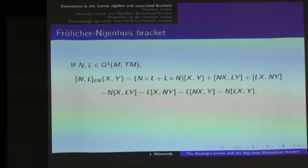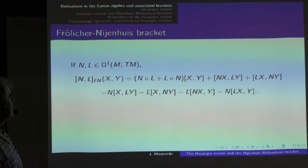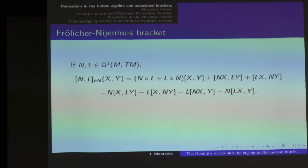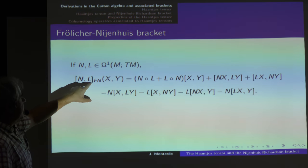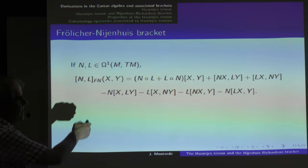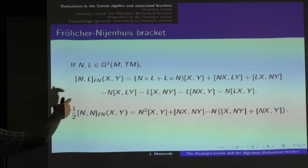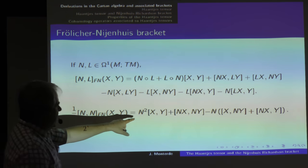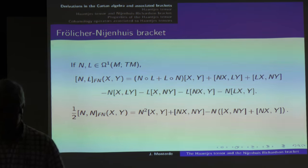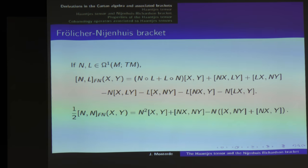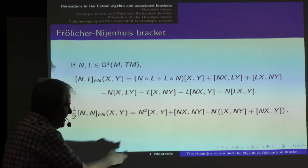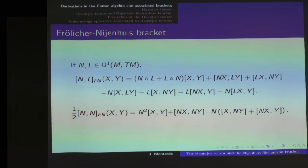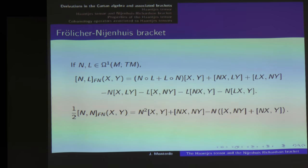In the case where the two vector-valued differential forms are endomorphisms of the tangent bundle, the Frölicher-Nijenhuis bracket of N and L has a specific expression. When L is the same endomorphism applied to itself, what we obtain is the classical expression of the Nijenhuis torsion — these four terms are exactly the classical Nijenhuis torsion. So the Nijenhuis torsion can be expressed via the Frölicher-Nijenhuis bracket.